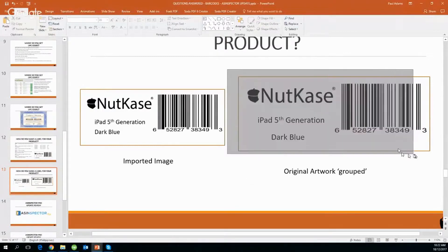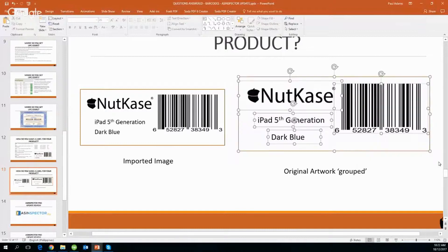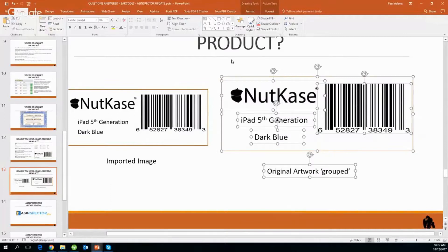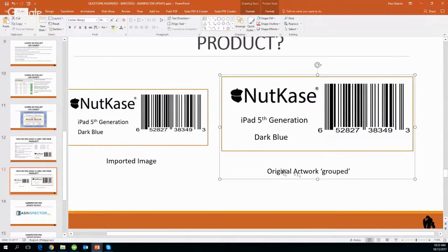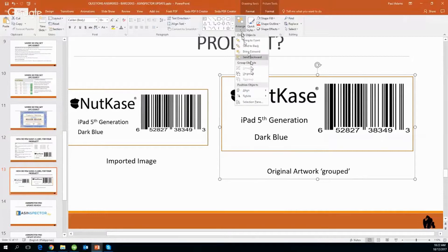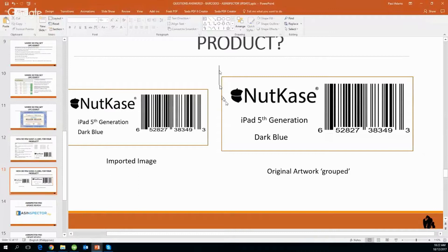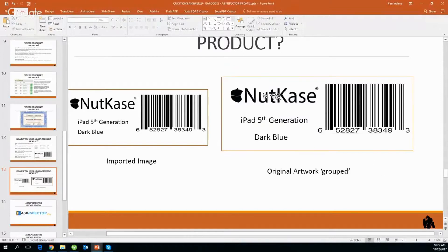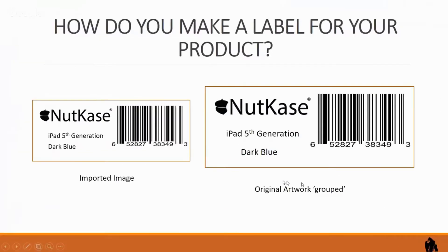Just be careful what you select when grouping. For example, if you accidentally select the original artwork along with your label and group them together, that note will become part of your artwork — you don't want to be sending that to your supplier. So ungroup again and select only the individual label elements. I'll leave this ungrouped for now so you can actually play with it once you get these slides. Let's go back to full-page presentation.